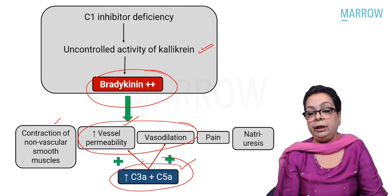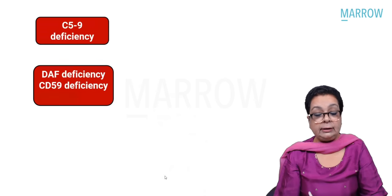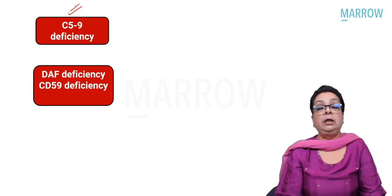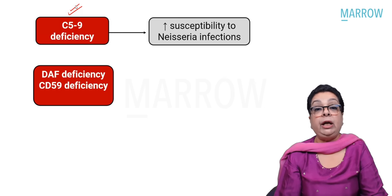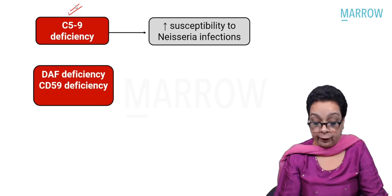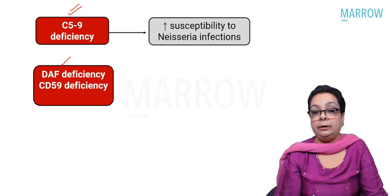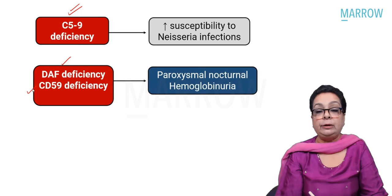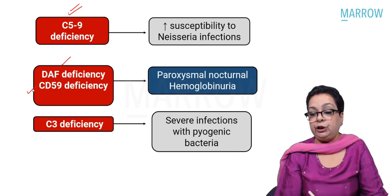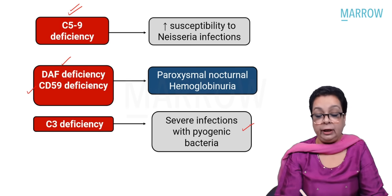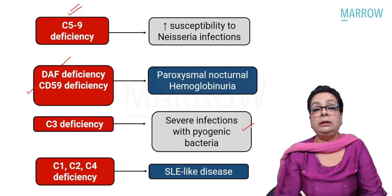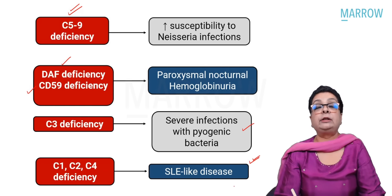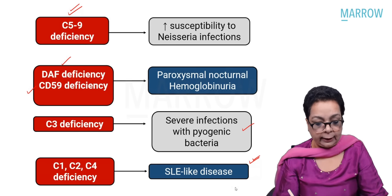Other important complement deficiencies: terminal complement component deficiencies lead to increased susceptibility to Neisseria infections. Decay accelerating factor (DAF) and CD59 (protectin) deficiency leads to paroxysmal nocturnal hemoglobinuria. C3 deficiency leads to increased incidence of infections with pyogenic bacteria. C1, C2, and C4 deficiency leads to impaired clearance of immune complexes, causing SLE-like disease.